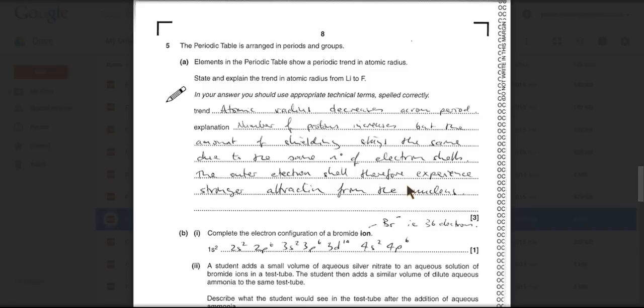The atomic radius decreases across any period because the number of protons are increasing each time but the amount of shielding stays the same. So the outer electrons experience stronger attraction from the increased nuclear charge.